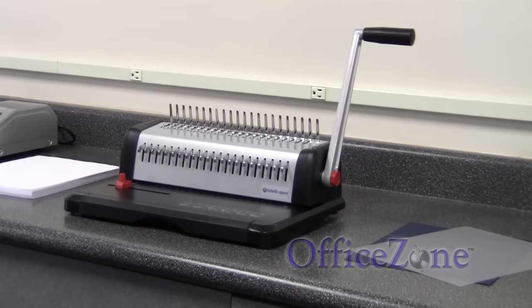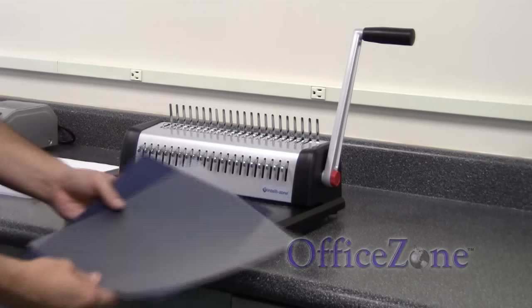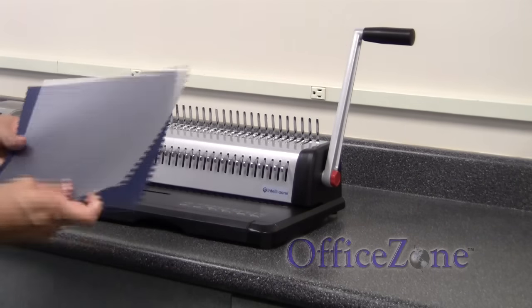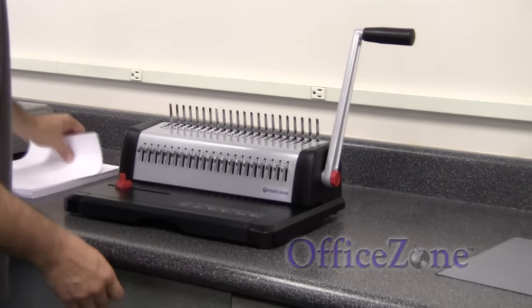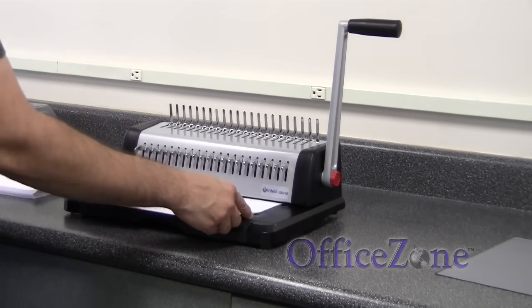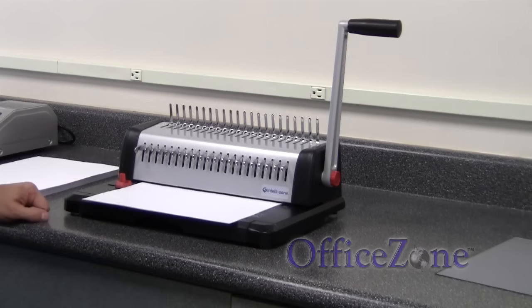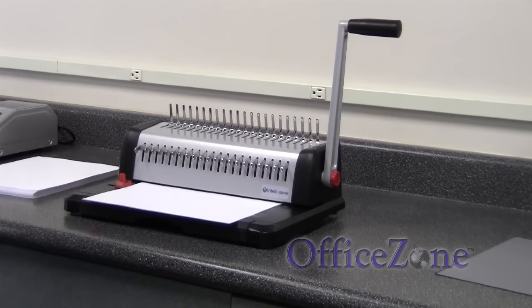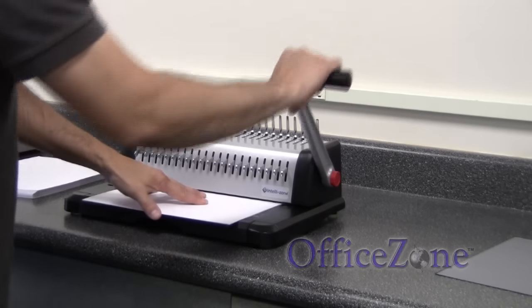So the first thing that you're going to want to do is you're going to want to punch your paper and your back sheet and cover sheet. In this case, we're using a clear cover and a card stock back. I'm just going to be punching some paper here. If it's an electric machine, there's probably a button you push to punch the paper. I'd say 70 to 80% of the machines out there are manual. In this case, I'm using a manual machine.